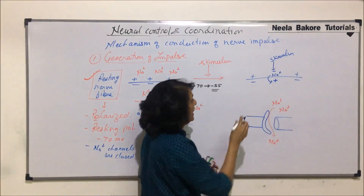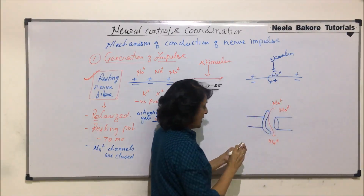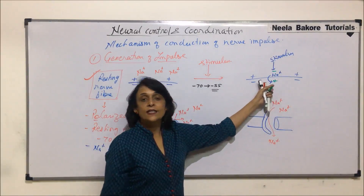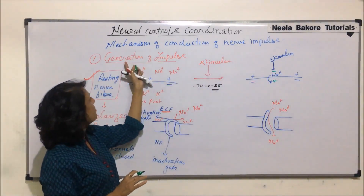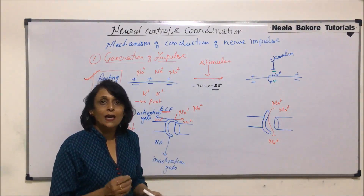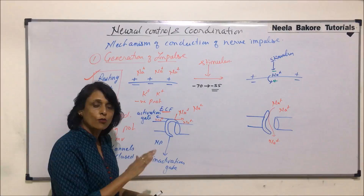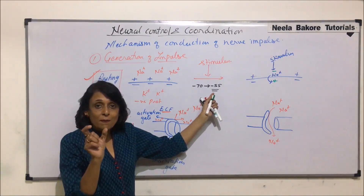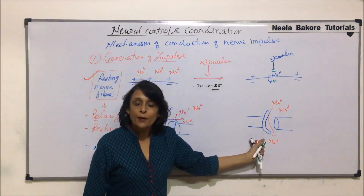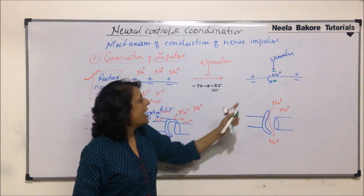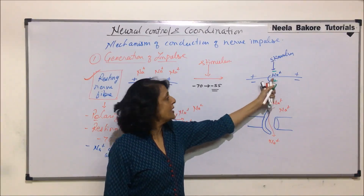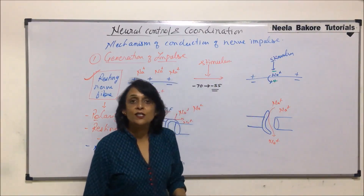This change — where it is now electronegative on the outer side and electropositive on the inner side — is where the impulse is generated. In the resting stage, sodium channels are closed; the membrane is polarized. As soon as stimulus is received, in that region only, the potential becomes minus 55. At this, sodium channels open, sodium starts to move in, charges shift — it becomes electropositive on the inner side and electronegative on the outer side. The impulse is generated.